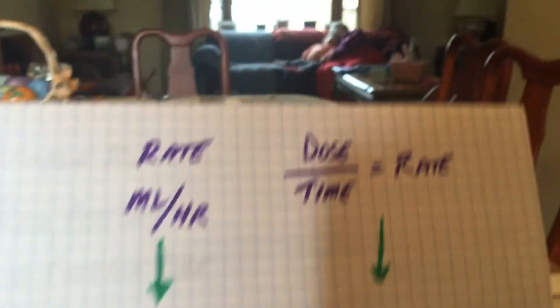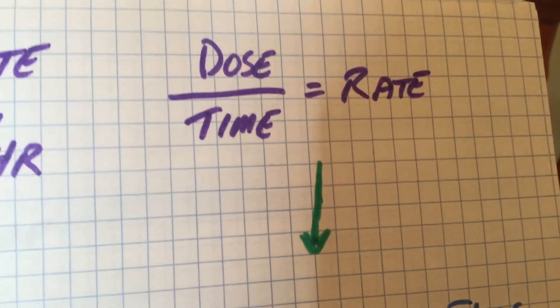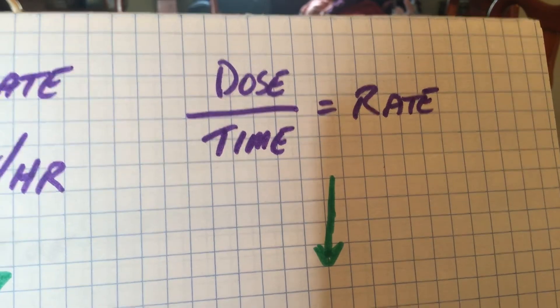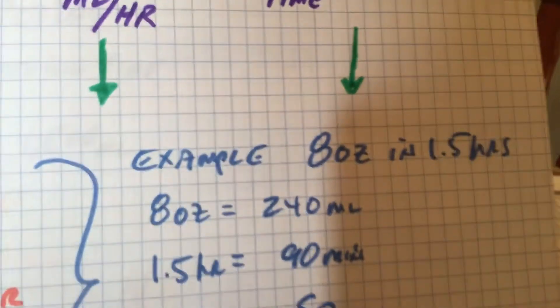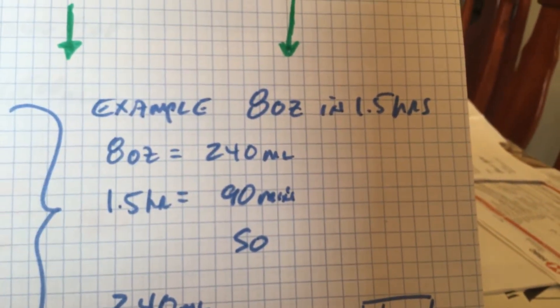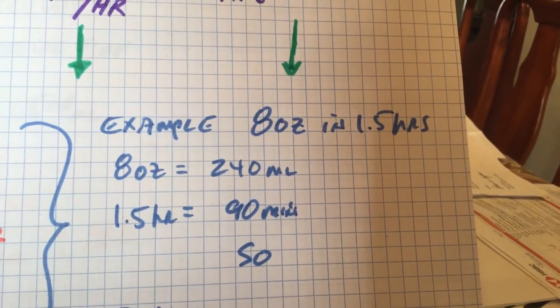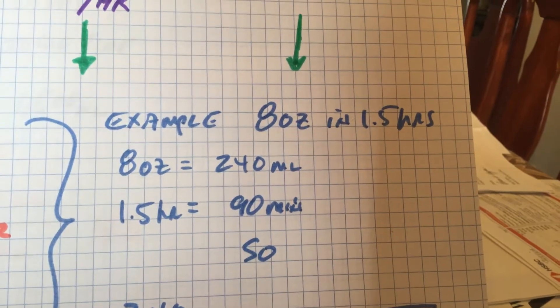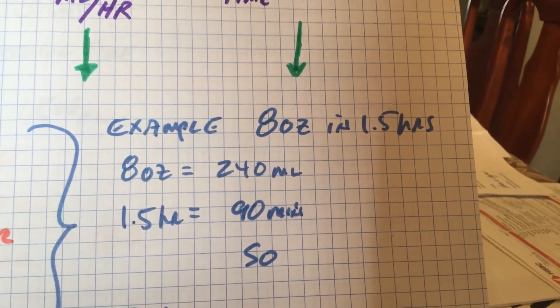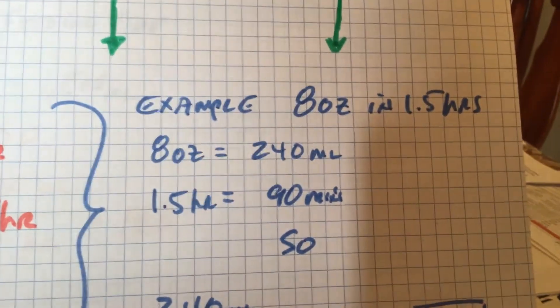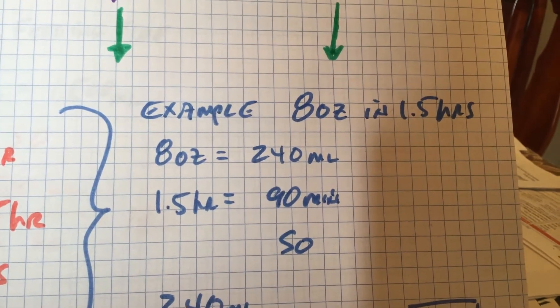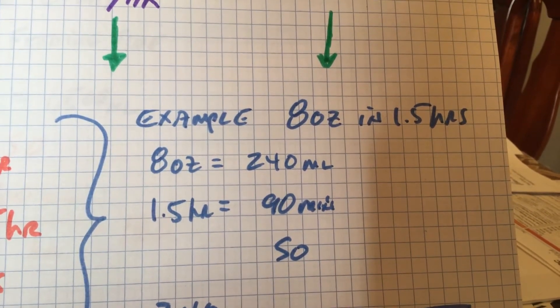Okay, here's an example. We want to do dosage over time equals the rate. So here's the example. We have eight ounces in one and a half hours. So the child has to get eight ounces in one and a half hours. Eight ounces is 240 milliliters, correct?